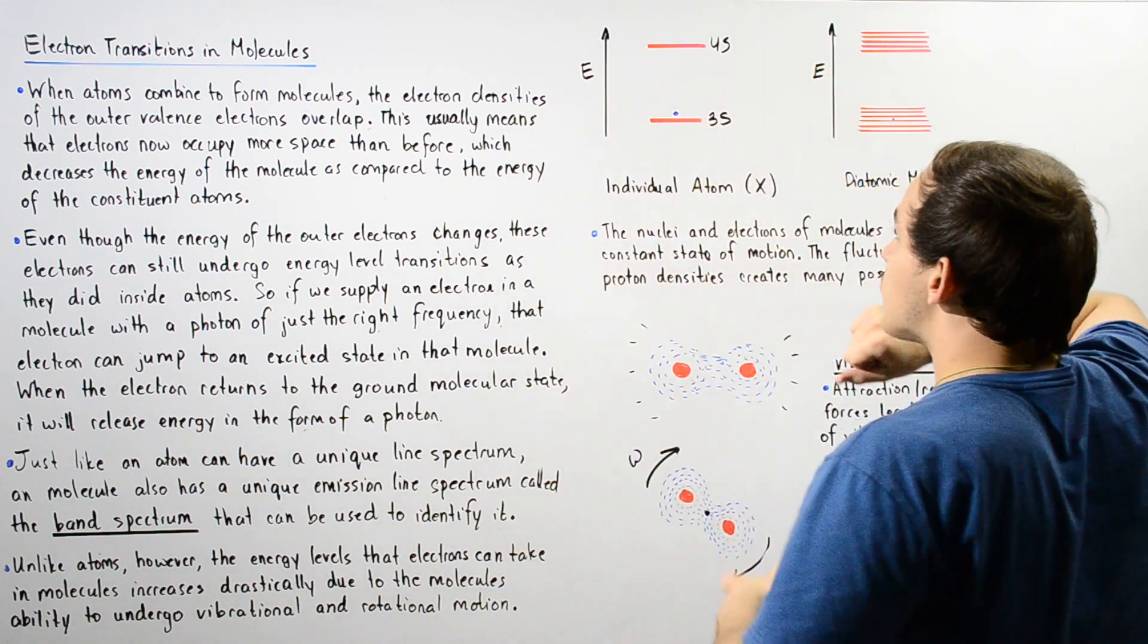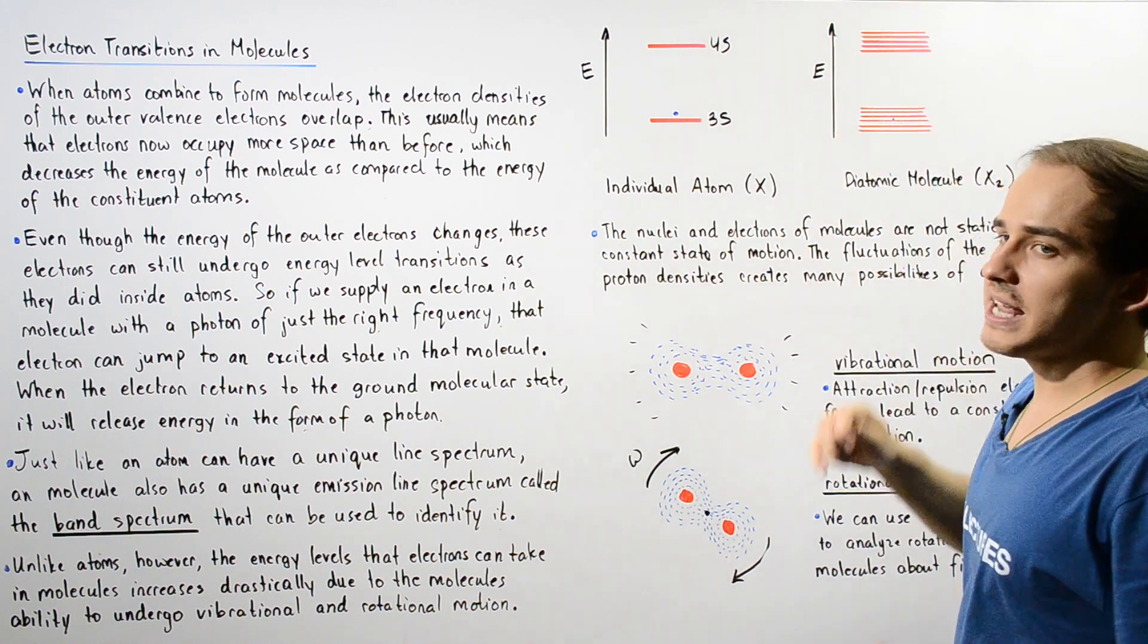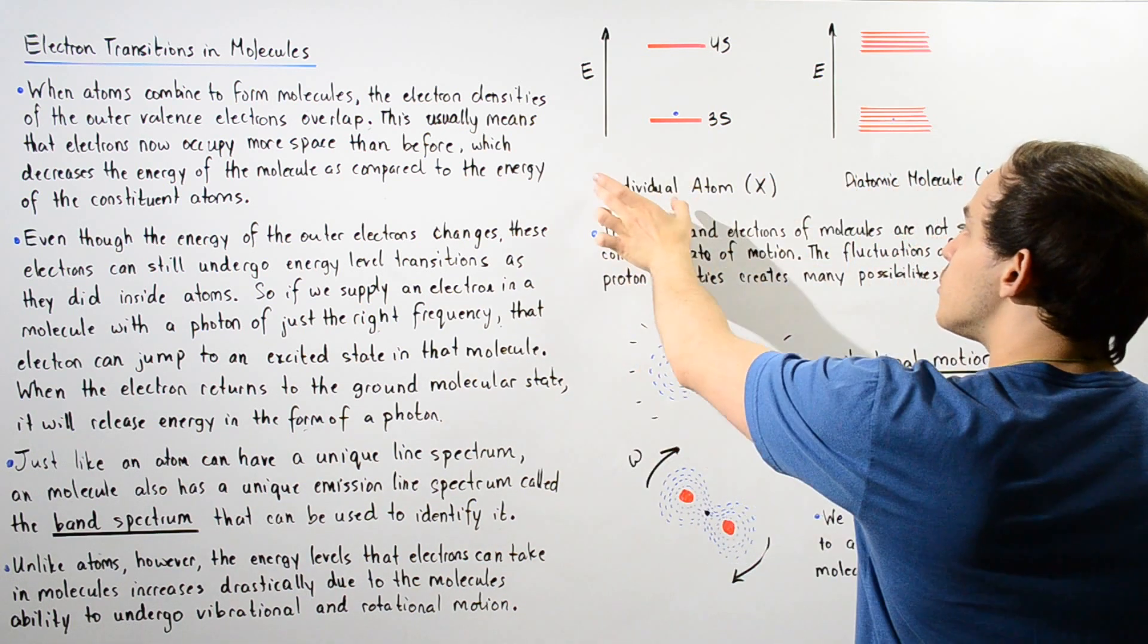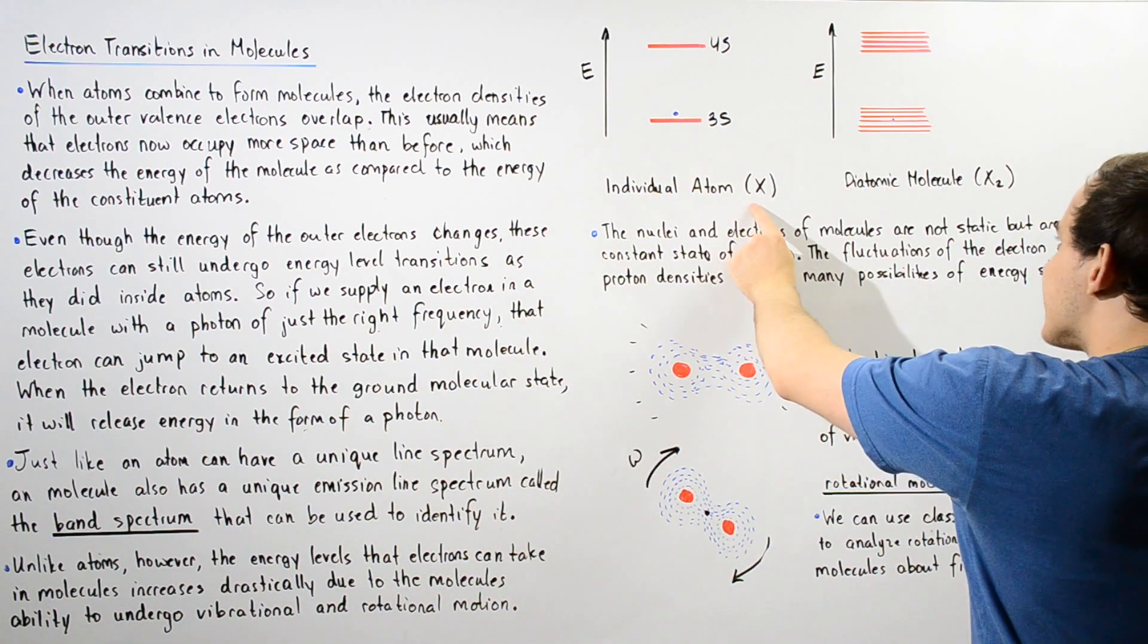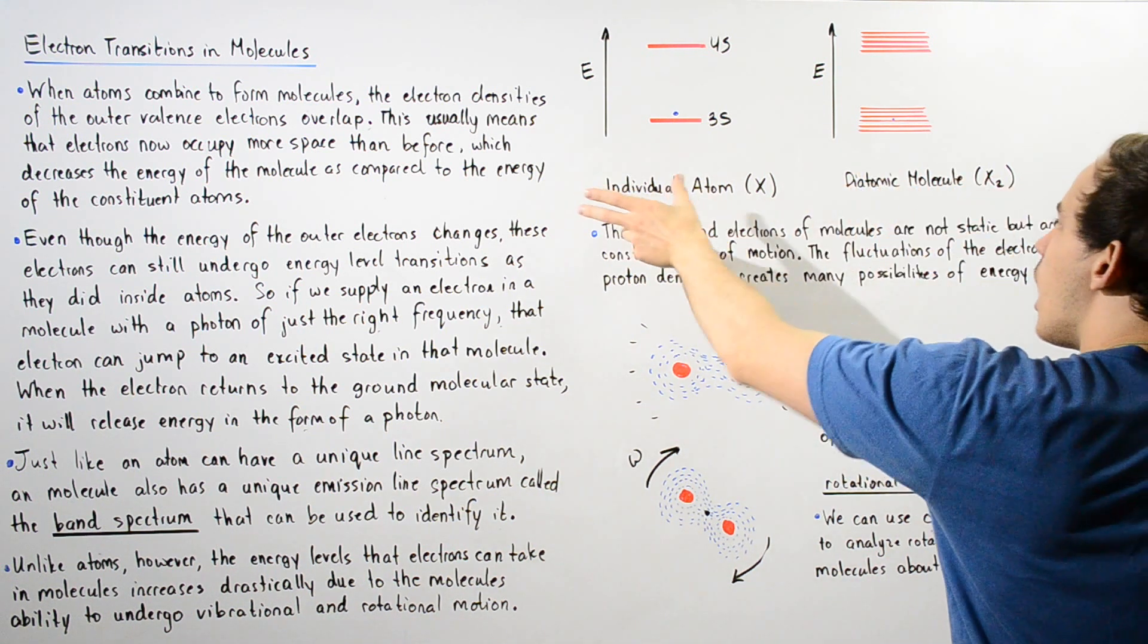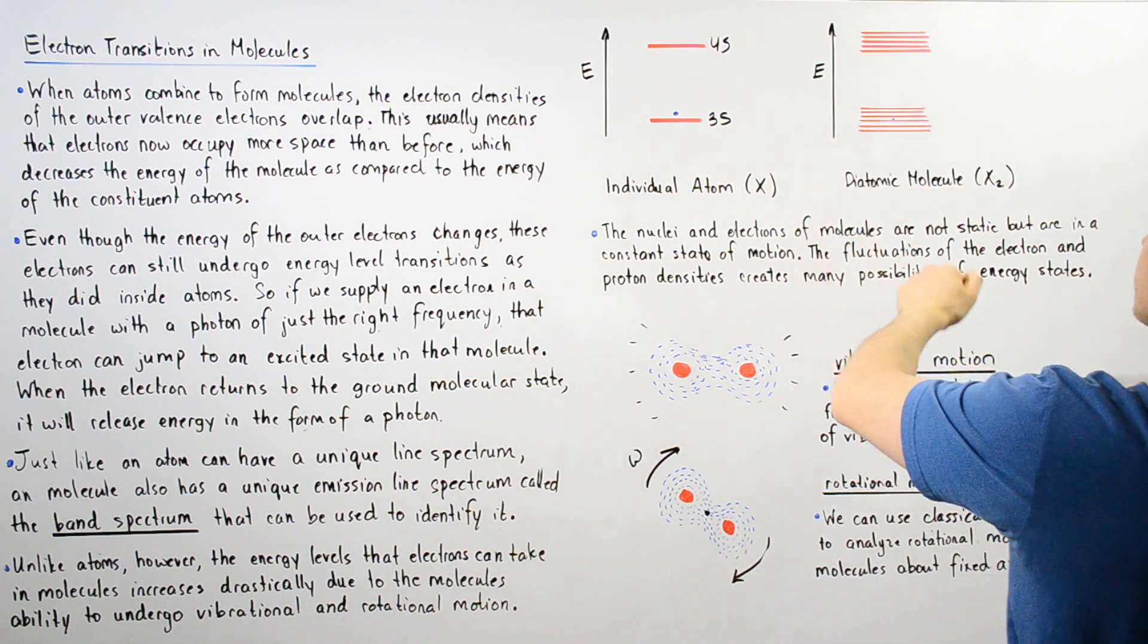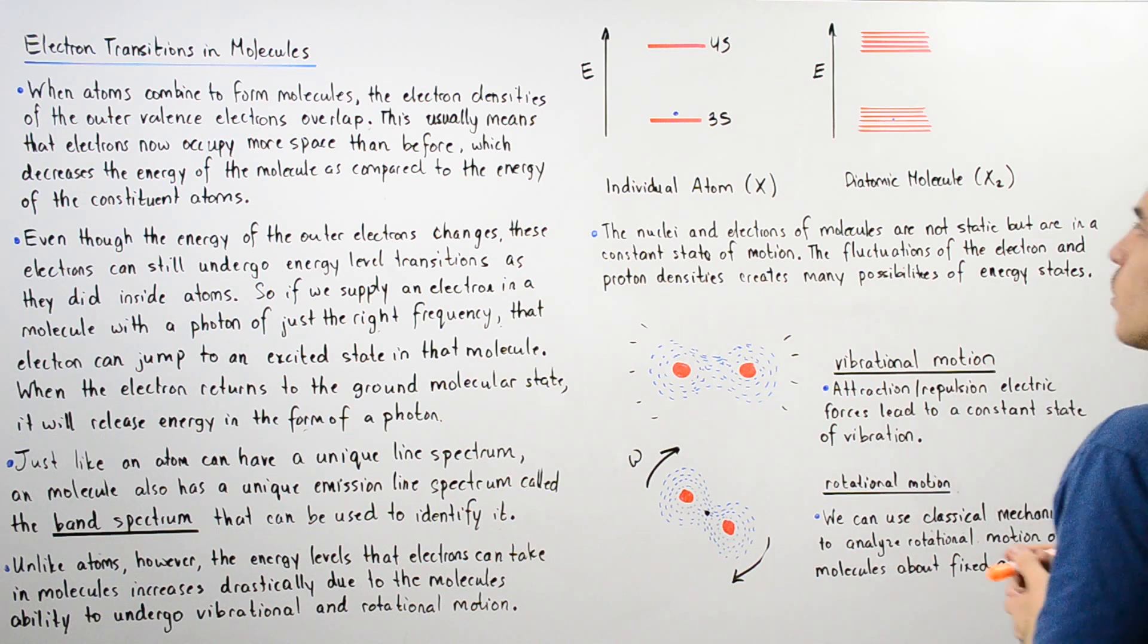So this graph contains our energy y-axis, as does this graph. This graph is for the individual atom—let's suppose our atom is given by X. And this is our diatomic molecule version of this atom, given by X2, so we have some covalent bond between our two X atoms.